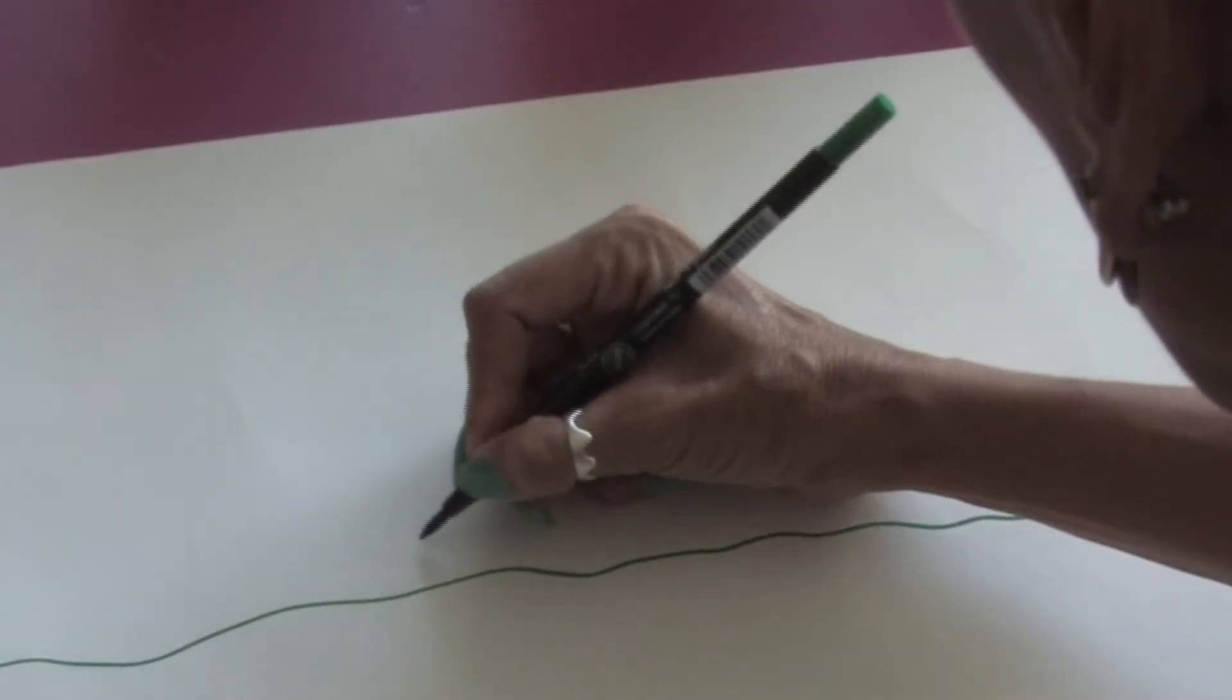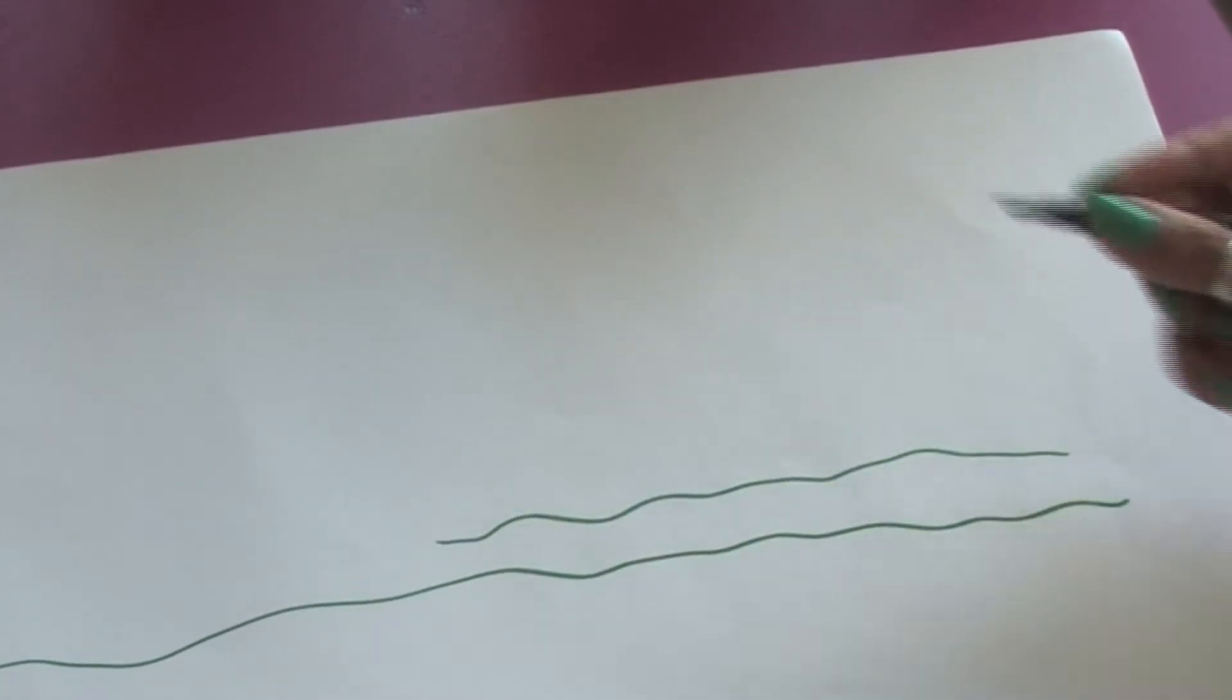We're going to begin with drawing the horizon line, which would be the ground where the elephant plant will grow. You want to vary that line just a little bit so that it looks natural.